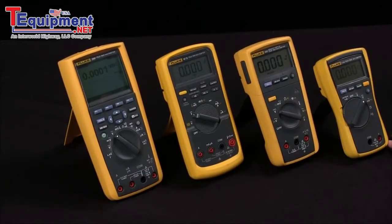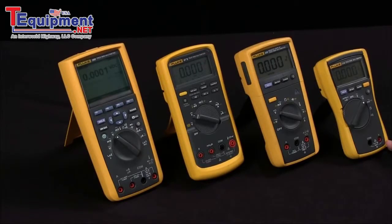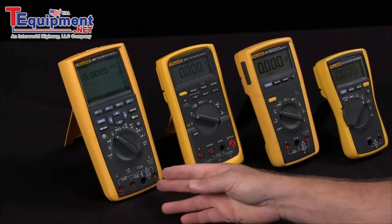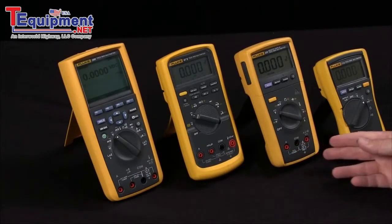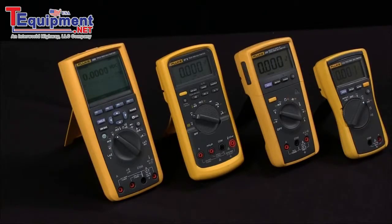There's a difference between the specifications of accuracy and resolution. Accuracy relates to how closely the measurement you're taking is to the true value of that measurement, and different multimeters will have different levels of accuracy depending on the capabilities within that multimeter.